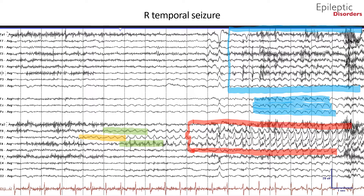We will now go over the same right temporal seizure in an average montage to show the spatiotemporal evolution. In this page, in the fourth second noted in orange highlight over the T2 channel, there is low amplitude 2 to 3 hertz delta activity that quickly spreads to F8 and T4 region. The first unequivocal ictal onset is at the T2 channel in the fourth second of the page, as denoted by the star. Note the evolution in morphology, frequency, and amplitude from low amplitude delta activity to higher amplitude sharply contoured 4 hertz theta frequency sharp waves, noted by the red highlight. Towards the end of the page, there is spatiotemporal evolution with rhythmic 3 hertz delta activity over the left temporal, central, and midline channels, noted by the blue highlight.